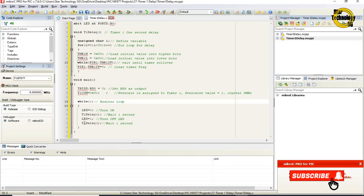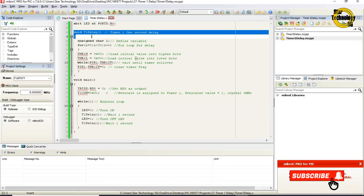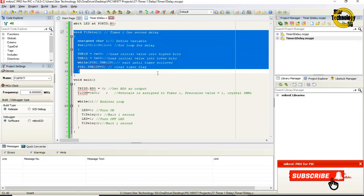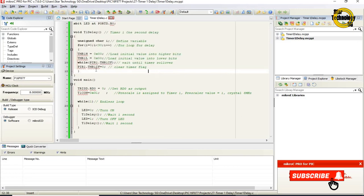while 1. Endless loop. LED equals zero, turn on LED. T1delay. Call Timer 1 delay and wait 1 second. Whenever we call the Timer 1 delay function, it will stay in this loop and wait here while Timer 1 flag rollover. After that it will clear the Timer 1 flag and repeat for loop 30 times and we get 1 second delay. After that, LED equals 1, turn off LED. T1delay. Call Timer 1 delay and wait 1 second.